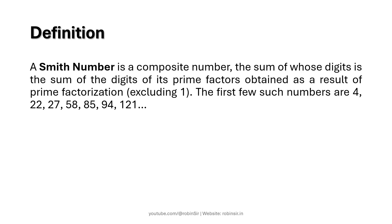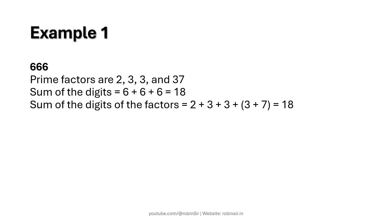So let's try to understand this with an example. Consider the number 666. The prime factors of this number are 2, 3, 3, and 37. Now the sum of the digits is 6 + 6 + 6 = 18, and the sum of the digits of the prime factors is 2 + 3 + 3 + (3 + 7) = 18. This is why 666 is a Smith number.